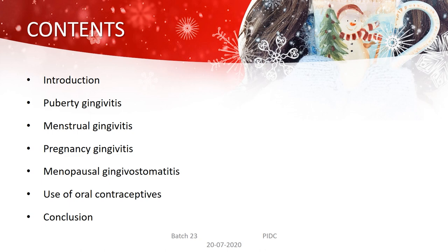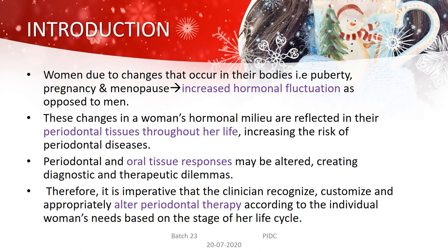Women, due to changes that occur in their bodies during puberty, pregnancy, or menopause, have increased hormonal fluctuation as opposed to men. These changes in women's hormonal milieu are reflected in their periodontal tissue throughout her life, increasing the risk of periodontal diseases. Periodontal and oral tissue responses may be altered, creating diagnostic and therapeutic dilemmas. Therefore, it is imperative that the clinician recognizes, customizes, and appropriately alters periodontal therapy according to the individual woman's needs based on her life cycle.